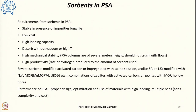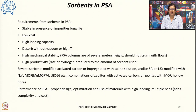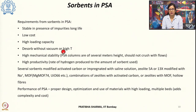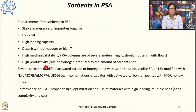The various requirements for an adsorbent used in pressure swing adsorption are: stability in the presence of feed stream impurities with a long operational life; low cost; high loading capacity; ability to desorb without vacuum or high temperature; mechanical stability — since PSA columns are several meters in height, the adsorbent must not crush into fine powder under pressure and flow. Additionally, high productivity is required, defined as the rate of hydrogen produced relative to the amount of adsorbent used.